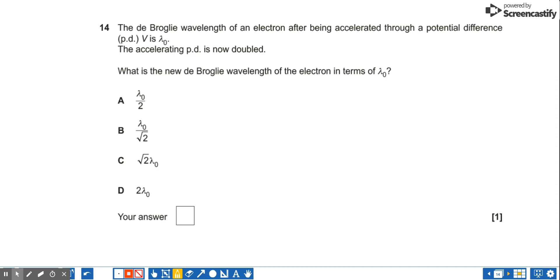The de Broglie wavelength of an electron after being accelerated through a potential difference V is lambda zero. The accelerating PD is now doubled. What is the new de Broglie wavelength of the electron in terms of lambda naught?